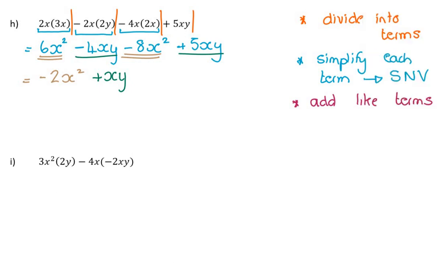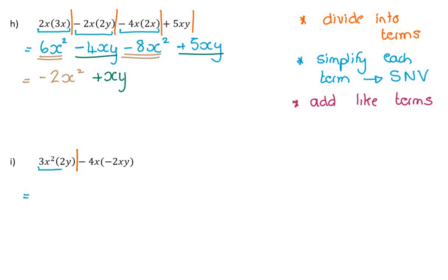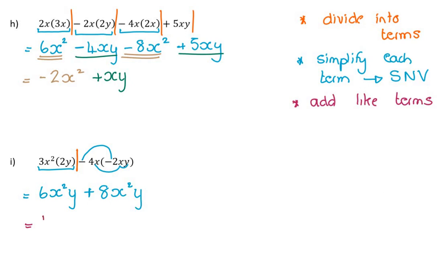Again, these terms don't look simplified, so divide into terms, then simplify each term. First term: 3 × 2 = 6, and x² × y = x²y, so 6x²y. Next term: negative × negative = positive, 4 × 2 = 8, and x × x × y = x²y, so +8x²y. They're both x²y terms — so 6 + 8 = 14x²y. Notice: when I said x × x, I changed the exponent because I was multiplying, and x × x = x². But when I add these together I'm no longer multiplying — the variables are just a label, so they don't change.